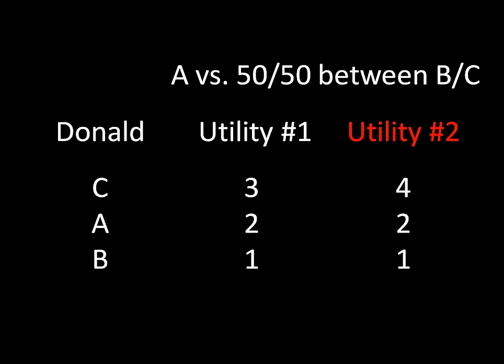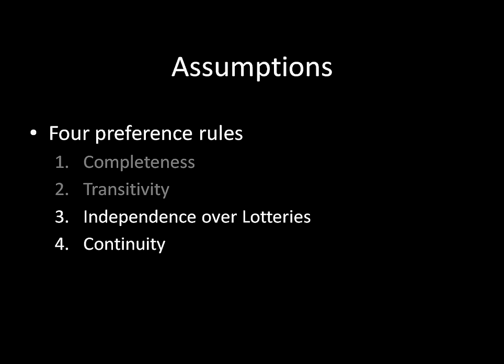But before we can even do that, we have to make some sort of assumptions about how individuals find preferences attractive, in other words, preference rules about lotteries themselves, even before we can start delving into the very specifics about comparing something like an outcome A to a 50-50 outcome between B and C. There are certain things that need to be true about the numbers that we use in order to be able to do any of this. And that's where these other two preference rules come into play for expected utility theory: independence over lotteries and continuity.